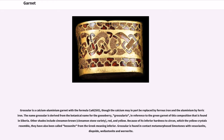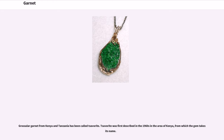Grossular is a calcium-aluminium garnet with the formula Ca₃Al₂(SiO₄)₃, though the calcium may in part be replaced by ferrous iron and the aluminium by ferrous iron. The name grossular is derived from the botanical name for the gooseberry, Grossularia, in reference to the green garnet of this composition found in Siberia. Other shades include cinnamon brown (cinnamon stone variety), red, and yellow. Because of its inferior hardness to zircon, which the yellow crystals resemble, they have also been called hessonite, from the Greek meaning inferior. Grossular is found in contact metamorphosed limestones with vesuvianite, diopside, wollastonite, and wernerite. Grossular garnet from Kenya and Tanzania has been called tsavorite, first described in the 1960s in the area of Kenya from which the gem takes its name.